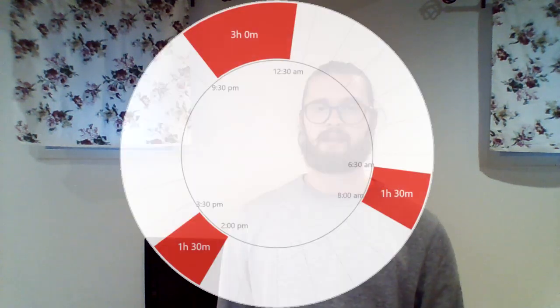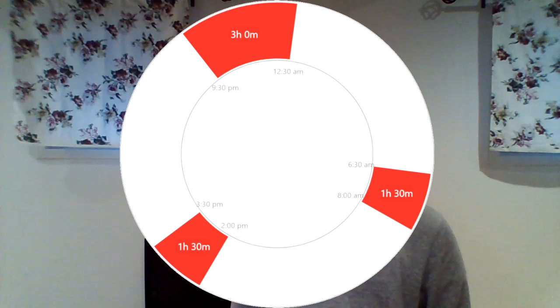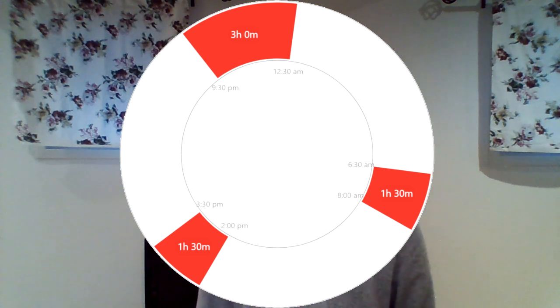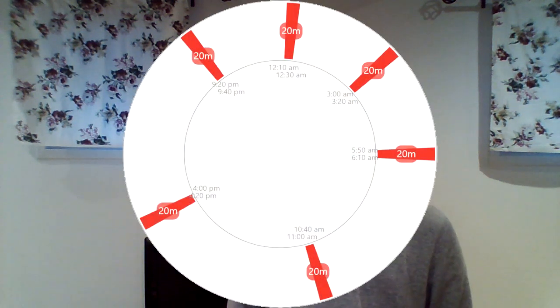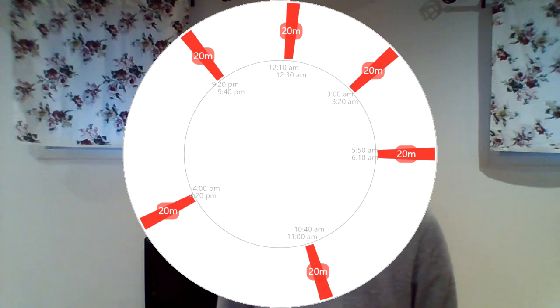Here we can immediately see that there are no naps and three cores, so it's a Triphasic schedule. However, because one core has two cycles, it's actually an extended schedule, and the name would therefore be Triphasic Extended. This next schedule has no cores, so it's a nap-only schedule. If we count the naps — one, two, three, four, five, six — we can see that it's Uberman. But because the naps are mostly centered at night, it's a fundamentally changed schedule, and we'll therefore call it Uberman Modified.